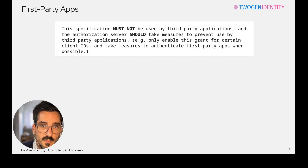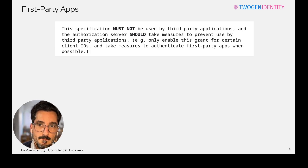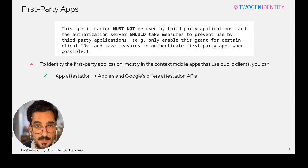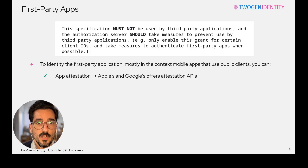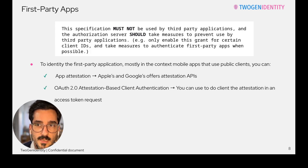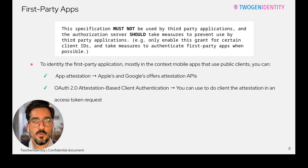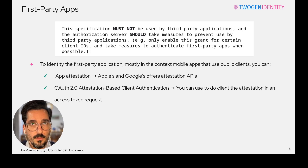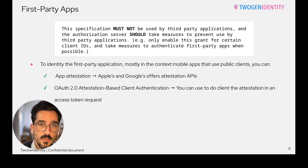If you are in a native application with a public client, you can play with two approaches. The first one is app attestation. Nowadays Google and Apple come with attestation APIs that you can use in order to have some kind of proof about the app's authenticity. And then you can use the OAuth2 attestation-based client authentication, which is also a draft nowadays, but it helps you to do app attestation at the token endpoint level. So when talking about token requests or the token endpoint, it's because we are following the OAuth2 specification.